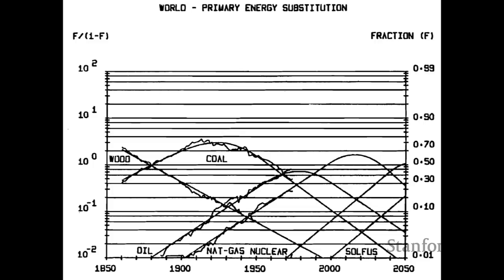They found that wood was in sharp decline, coal was rising and reached its peak around 1930–1940, and natural gas and nuclear came along later. At the far right is an imaginary source called 'solfus' — some other new energy source that would have started around the year 2000.